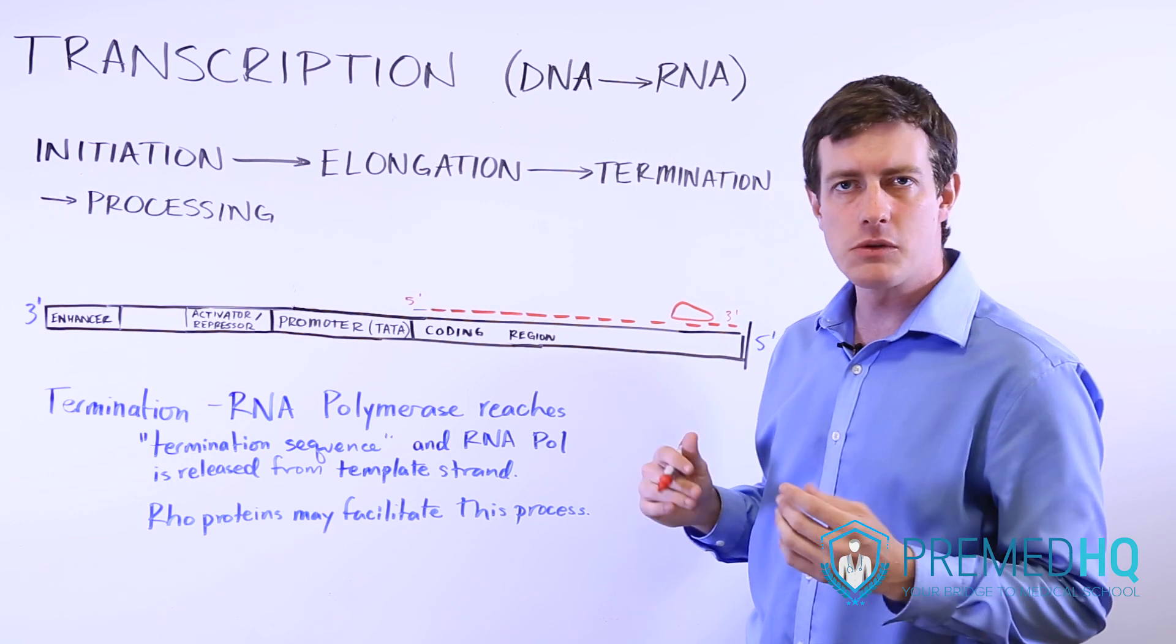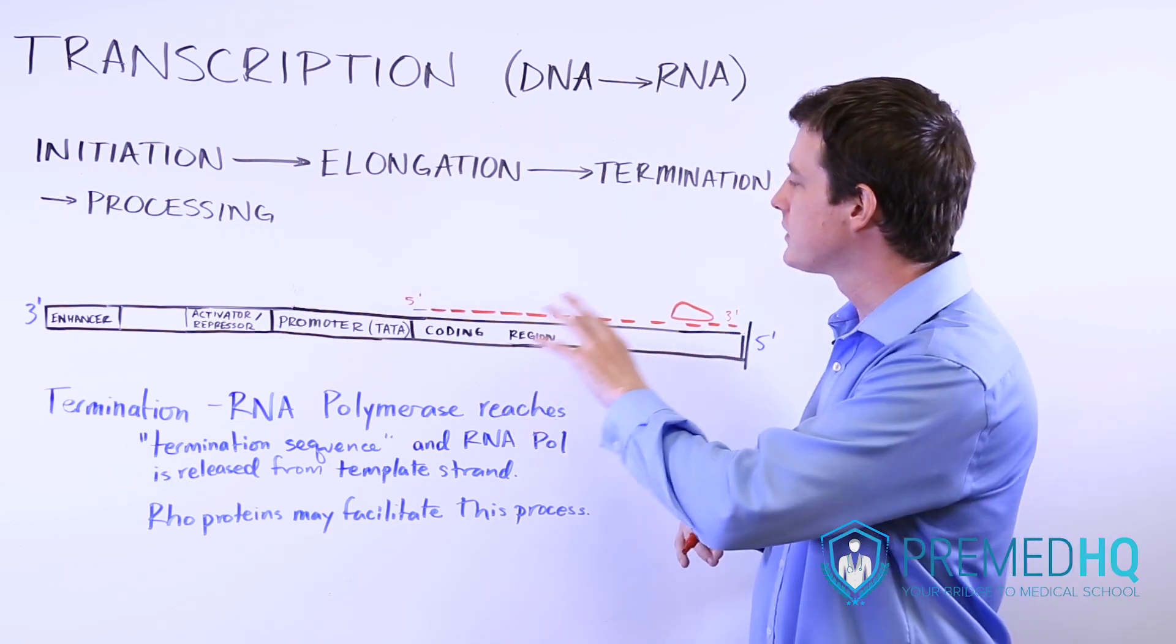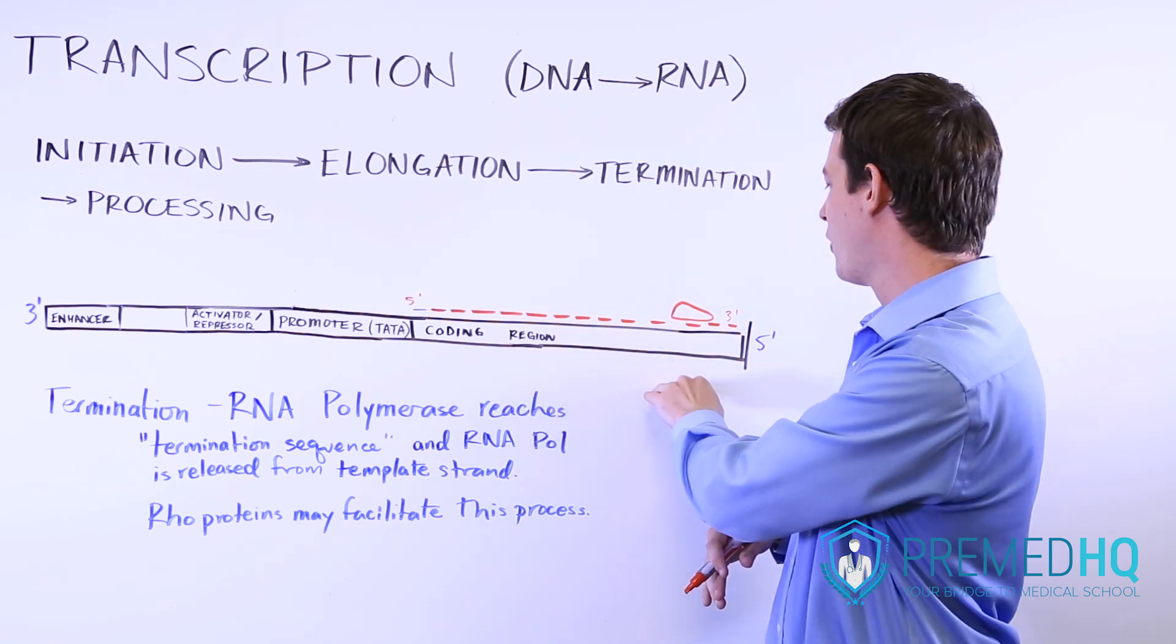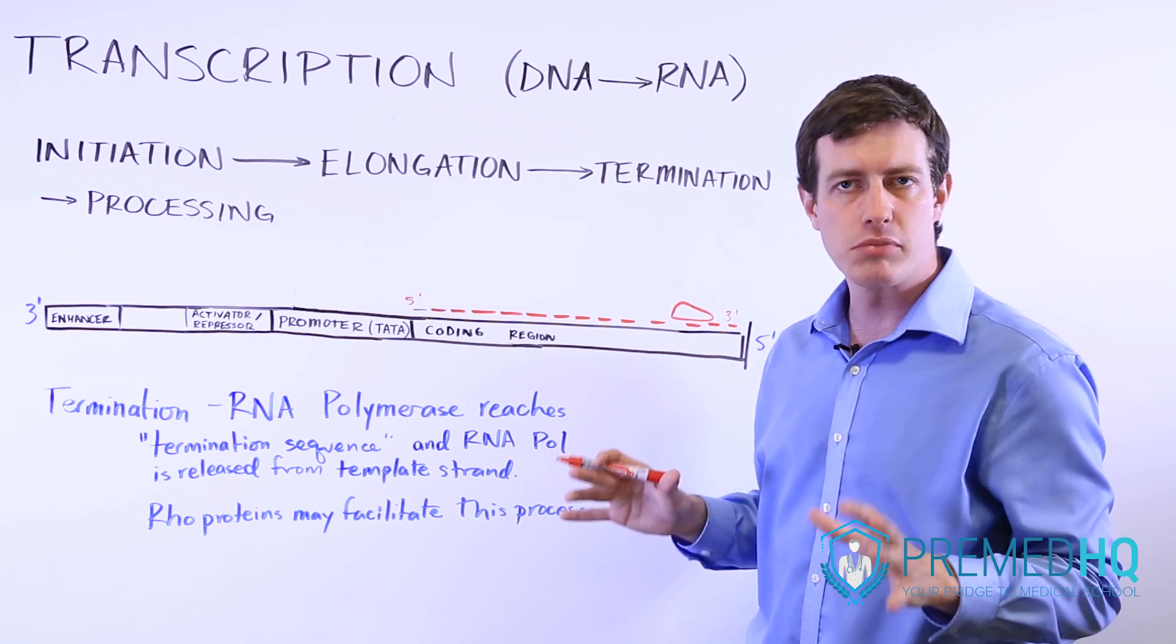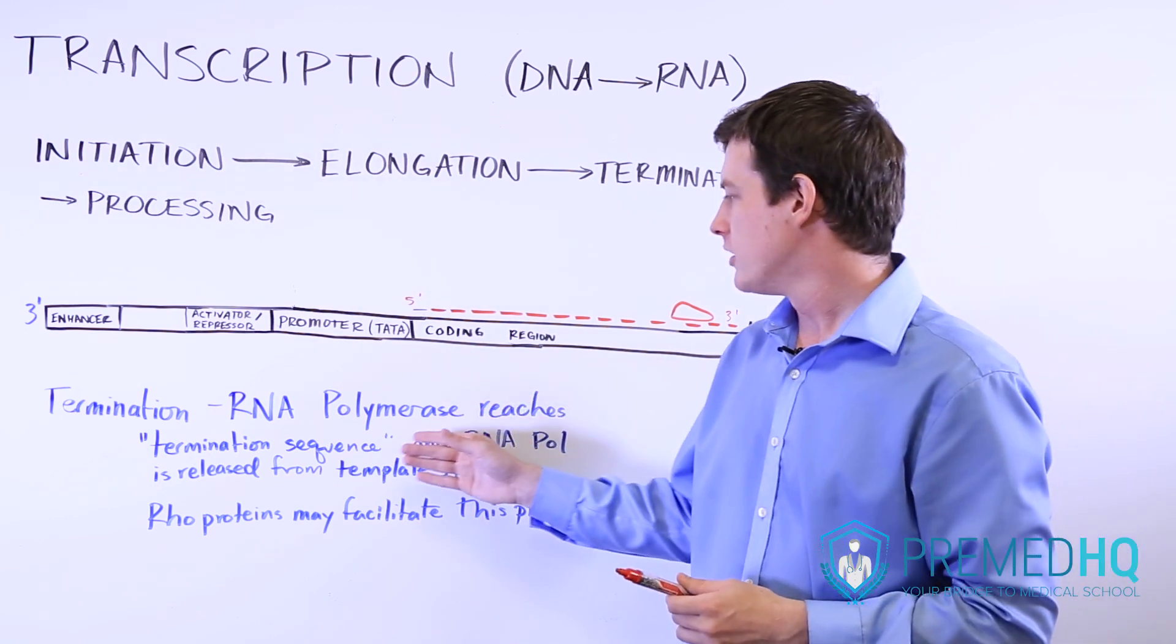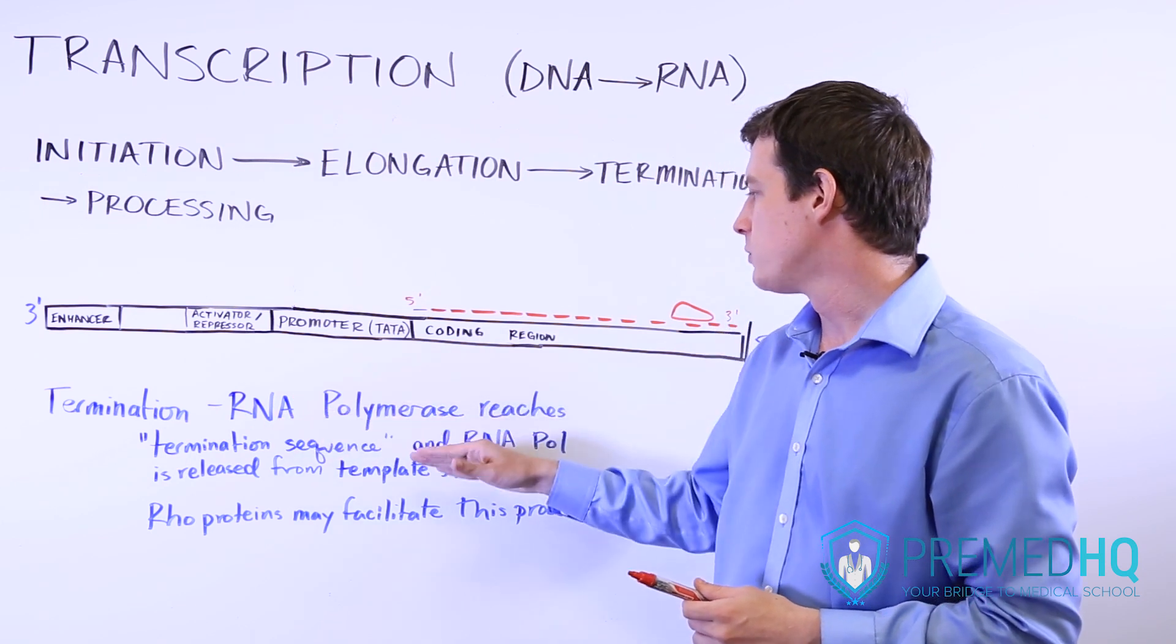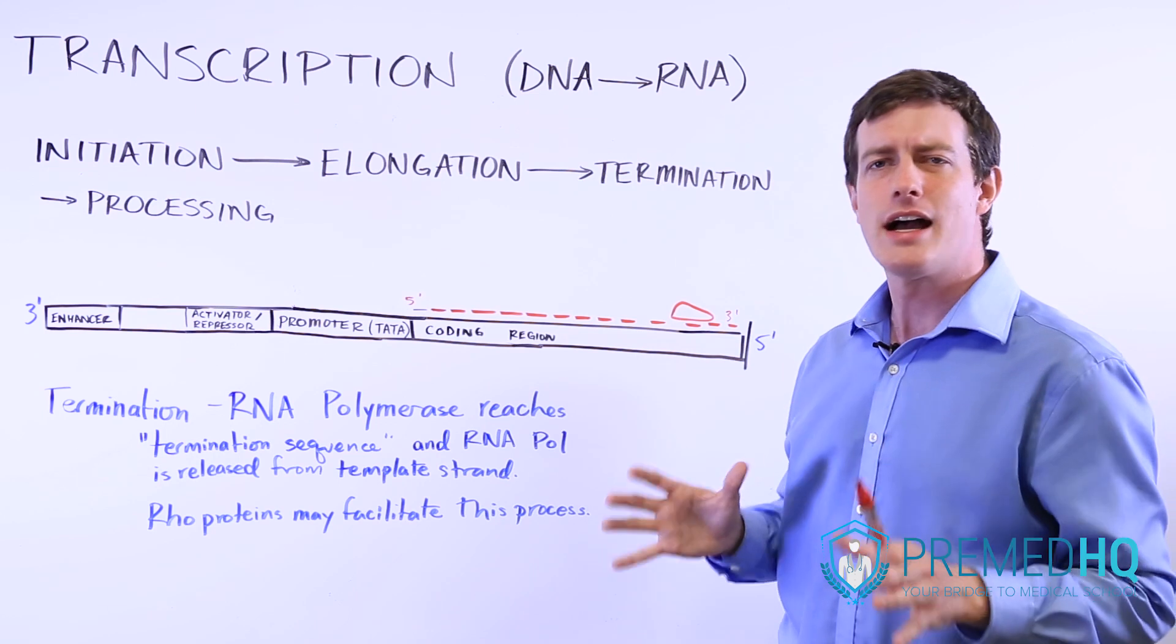The termination sequence isn't necessarily conserved throughout all genes, but there is some sequence that indicates that it's the end of the coding region. We've reached a point where the transcription process will stop, and when this occurs the RNA polymerase will then be released from the template strand.